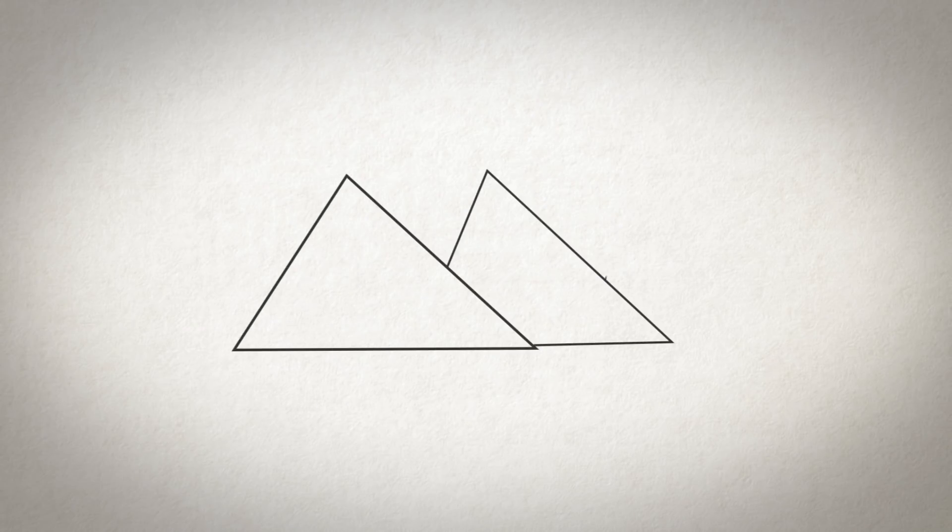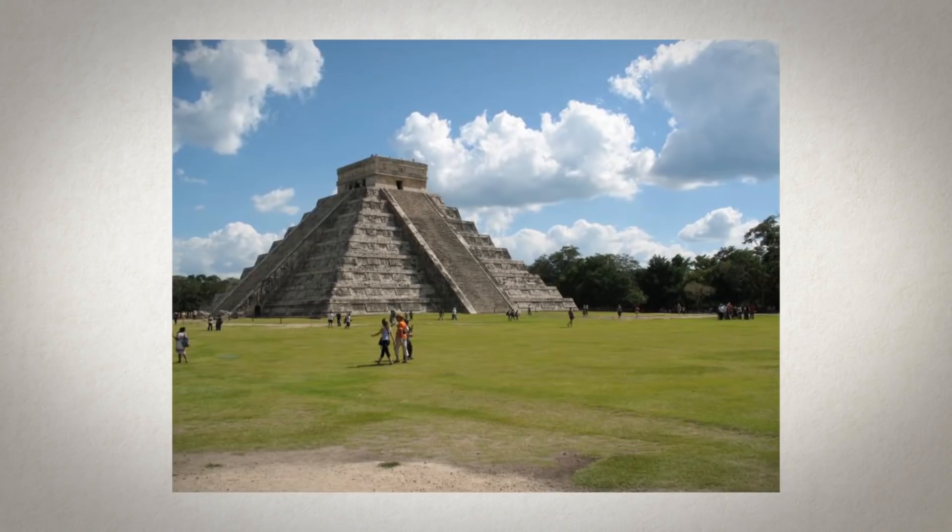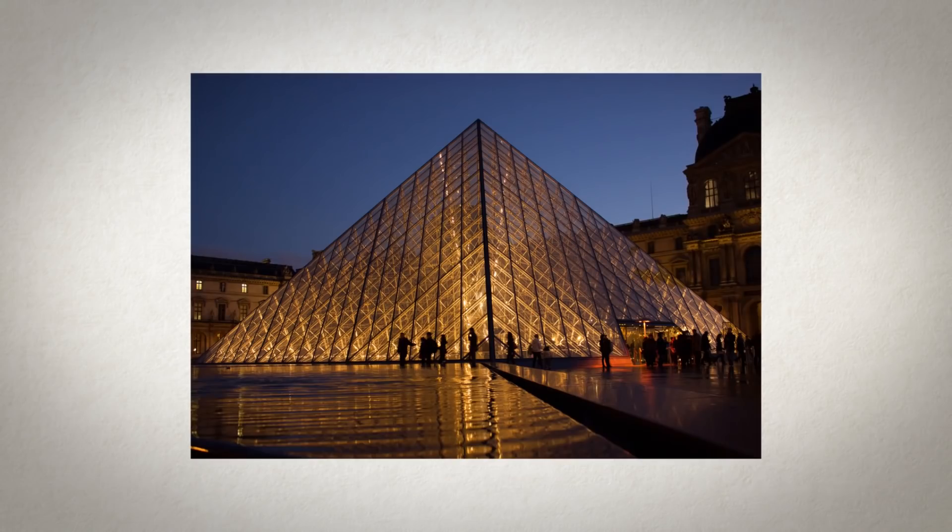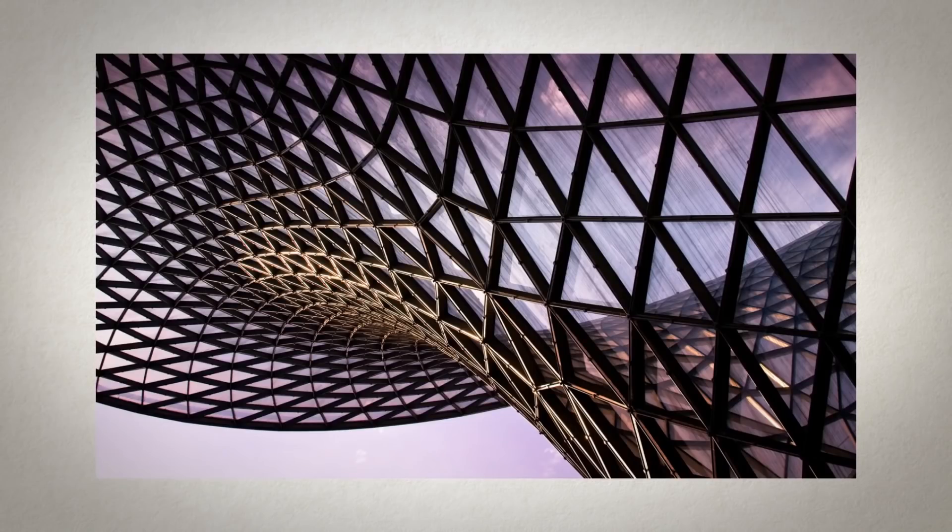In 2500 BC, the Pharaoh dreams of one of the wonders of the world, and through the creative line of the architect, the triangle becomes a pyramid, which is then repeated and redrawn throughout antiquity, the modern period, and the contemporary one.